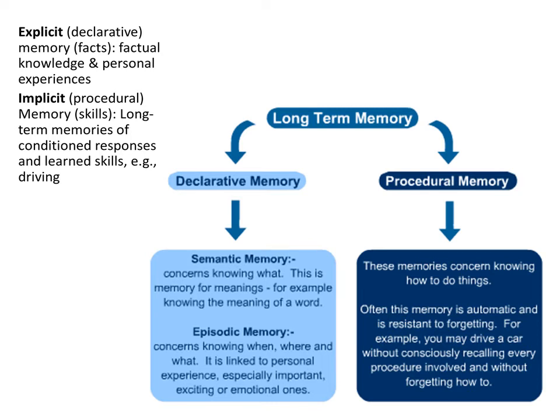Explicit memories are those experiences that can be intentionally and consciously remembered. It is knowledge or experiences that can be consciously recalled, such as facts, data, episodes, or events. Explicit memory can be further subcategorized as episodic or semantic. Episodic memory refers to first-hand experiences you have had — for example, you may remember your 16th birthday party. Semantic memory refers to knowledge of facts and concepts about the world — for example, you may remember the names of presidents or how to multiply numbers, such as 2 times 2 equals 4.